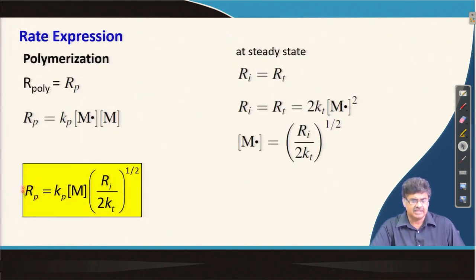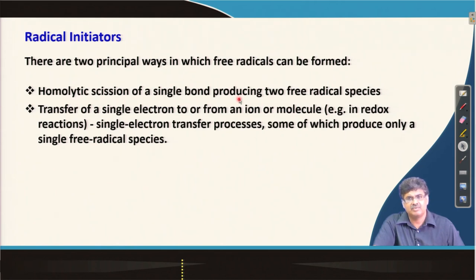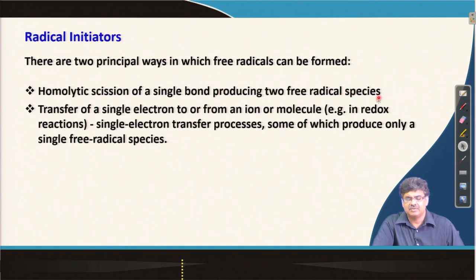The rate of propagation or polymerization depends on the type of radical initiation used, which is given by R_i, the rate of initiation. There are mainly two principal ways to generate free radicals: one by homolytic fission of a single bond, which produces two free radical species, and second by transfer of a single electron to or from an ion or molecule — as in a redox reaction — which produces a single free radical species.